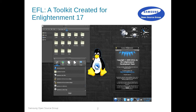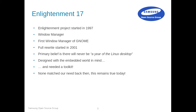Enlightenment Foundation Library, or EFL, was created around 2001 for Enlightenment 17, so it has been in development for more than a decade. Enlightenment 17 has a very long history — it was known first for Enlightenment 16, which was the first GNOME window manager around 1997 or so. Enlightenment 17 was a full rewrite of it.